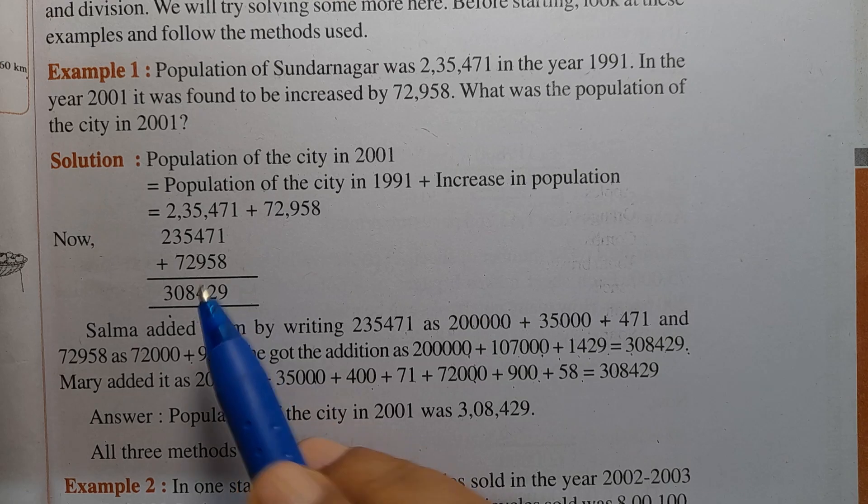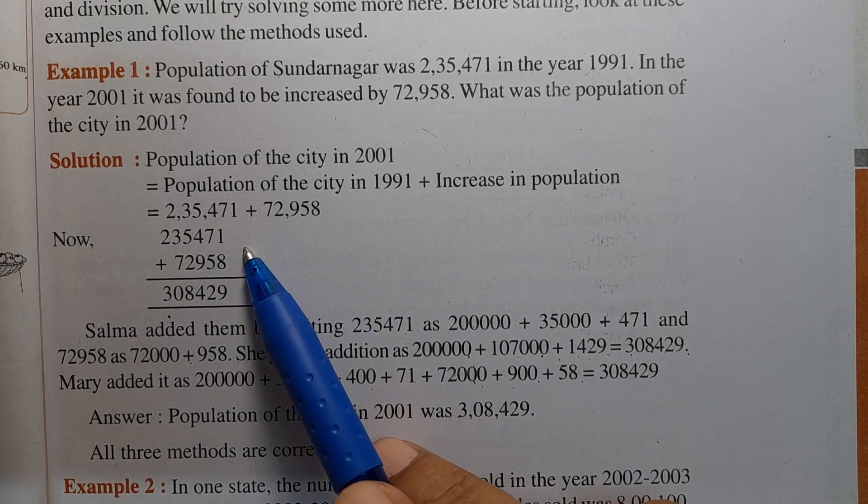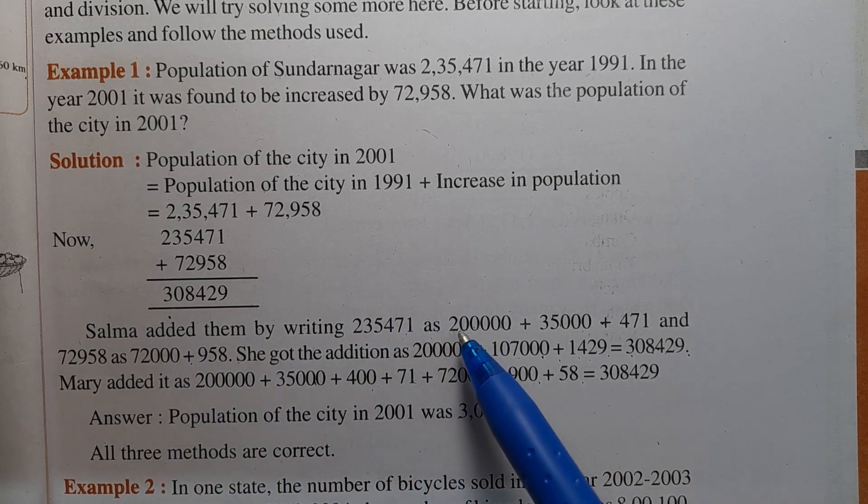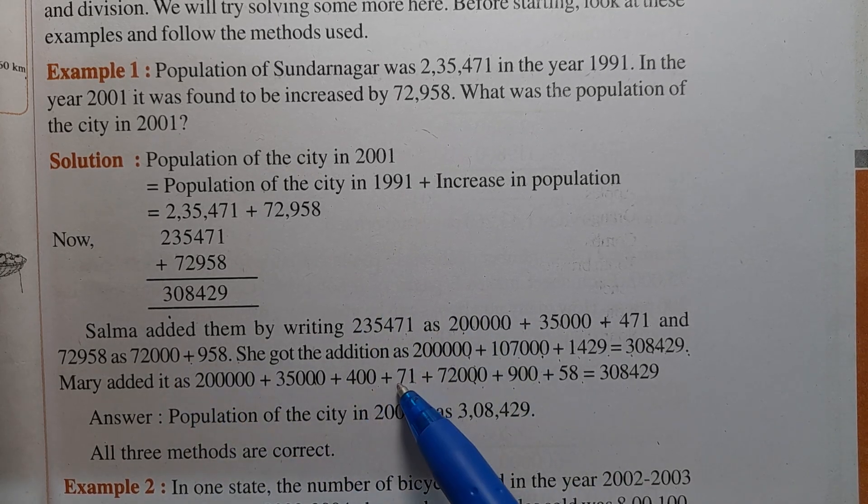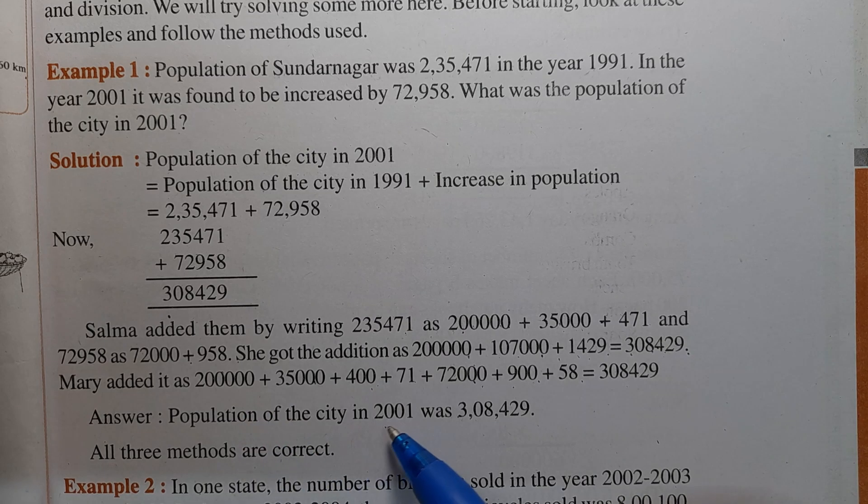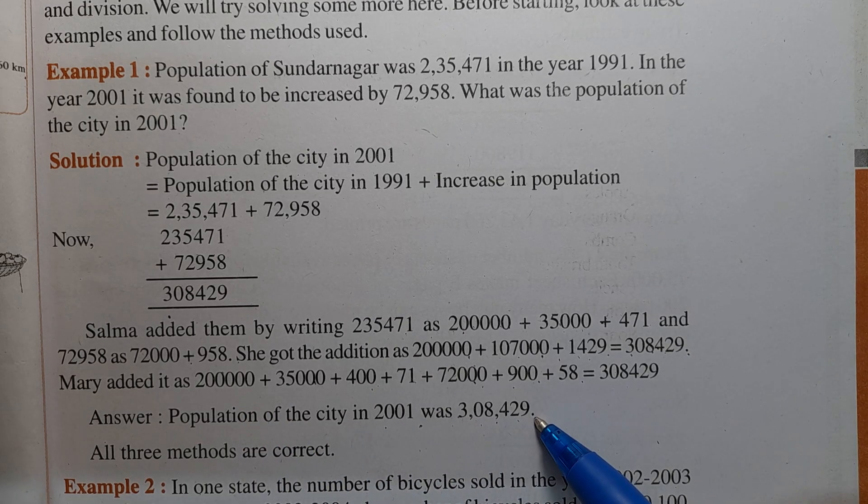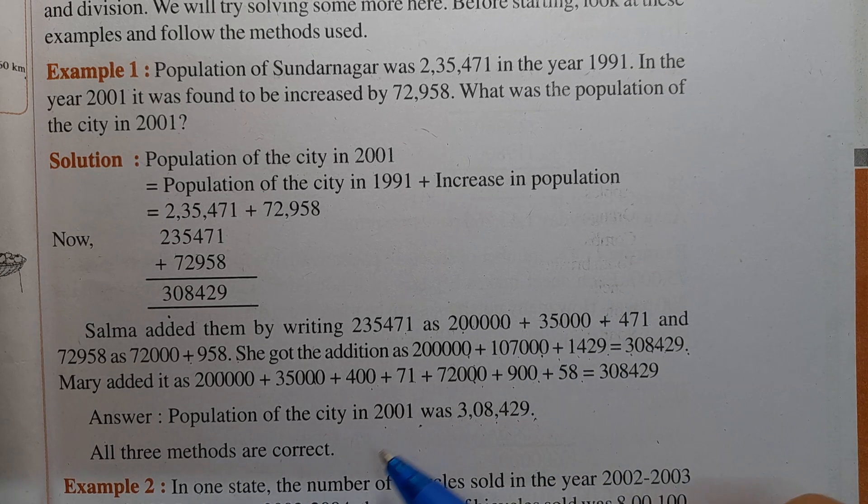This is the first method, this is the second method by Salma, and this is the third method by Mary. The answer: Population of the city in 2001 was 3,08,429. All three methods are correct.